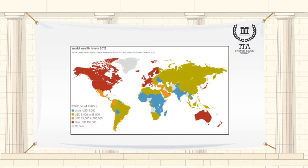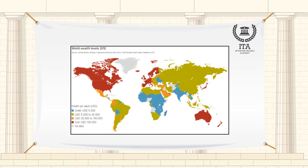The World Bank uses income per capita to classify countries, previously measured by gross national product. A formula based on earnings and financial health ranks each country annually. In some instances, the bank uses geographical information to determine if a country is a developed economy or falls under another designation.